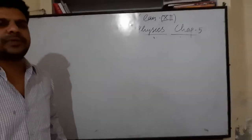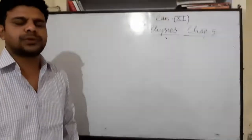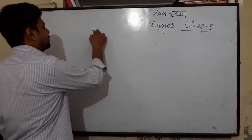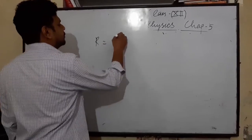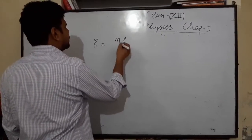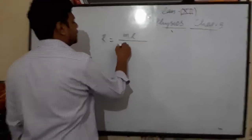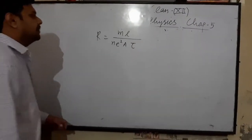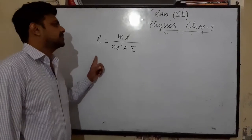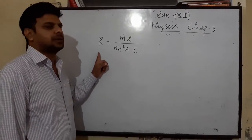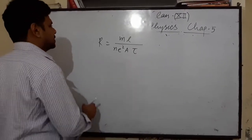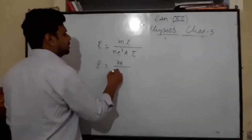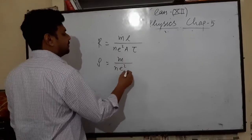Hello students. In last class we discussed Ohm's law and the proof of Ohm's law. The parametric formula for resistance is R = ρL/A, and the formula for resistivity will be ρ = m / (ne²τ).